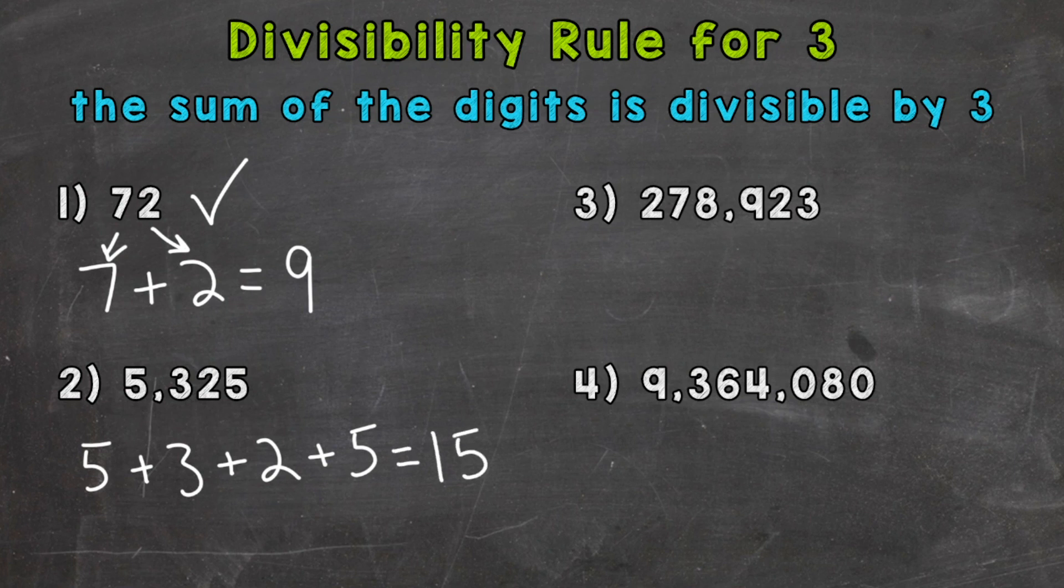So is 15 divisible by 3? Can we do 15 divided by 3 and get an answer without a remainder? Yes, we get 5. So that means our original number 5,325 is divisible by 3.